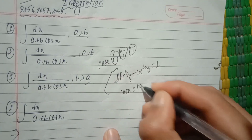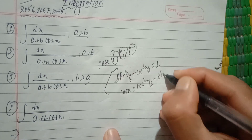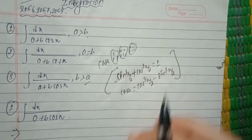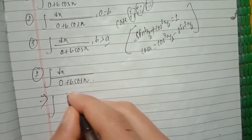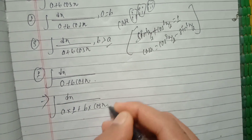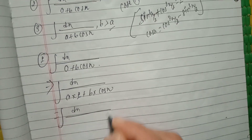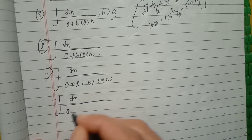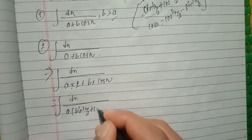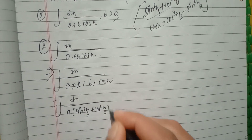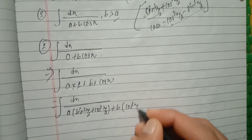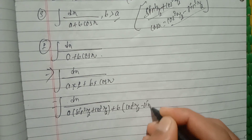cos x equals to cos square x by 2 minus sine square x by 2. Using this, the integration of dx divided by a into (sin square x by 2 plus cos square x by 2) plus b into (cos square x by 2 minus sine square x by 2).